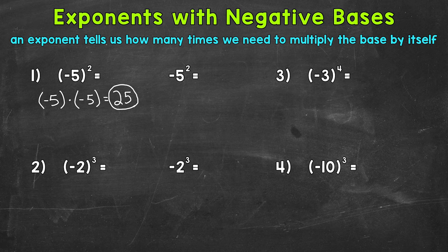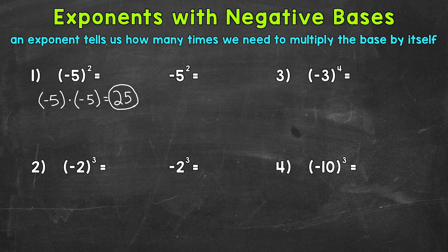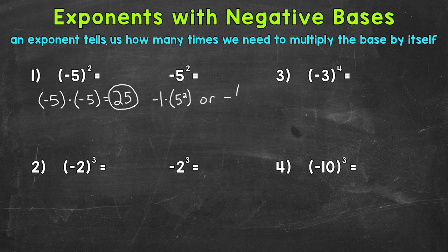Let's compare that to the negative 5 without parentheses. Here, that negative is not included or attached — it's not locked to the 5, so to speak. It stays in front. This means the same thing as negative 1 times 5 squared, where the negative just stays in front. We can think of it as negative 1 times 5 squared.